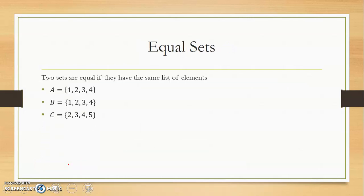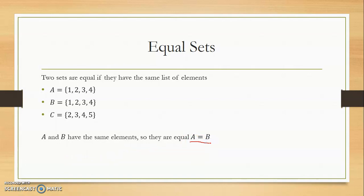Equal sets are two sets that are equal if they have the same list of elements. Looking at sets A, B, and C — A and B have the same elements, so they are equal sets. This is how we write it: set A is equal to set B. On the other hand, set A and set C are not equal sets because they have different elements — set A is not the same as set C.